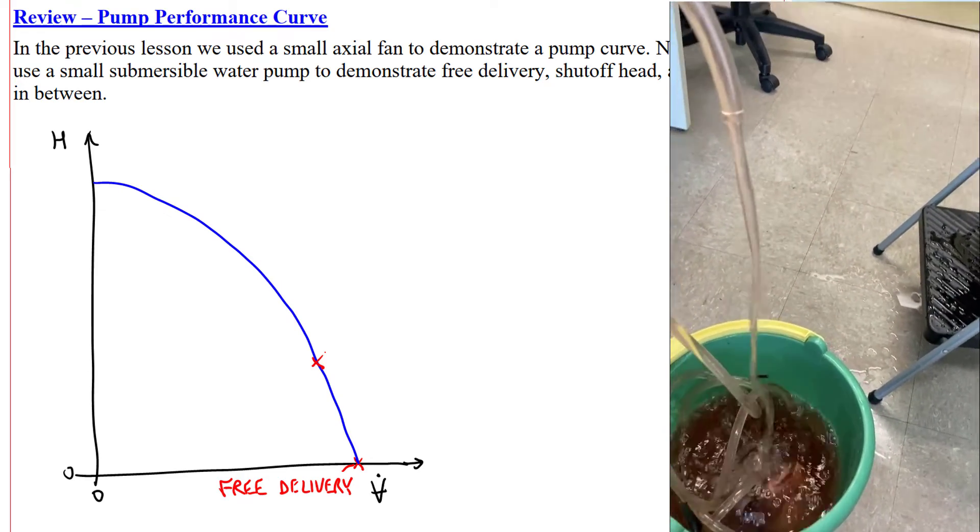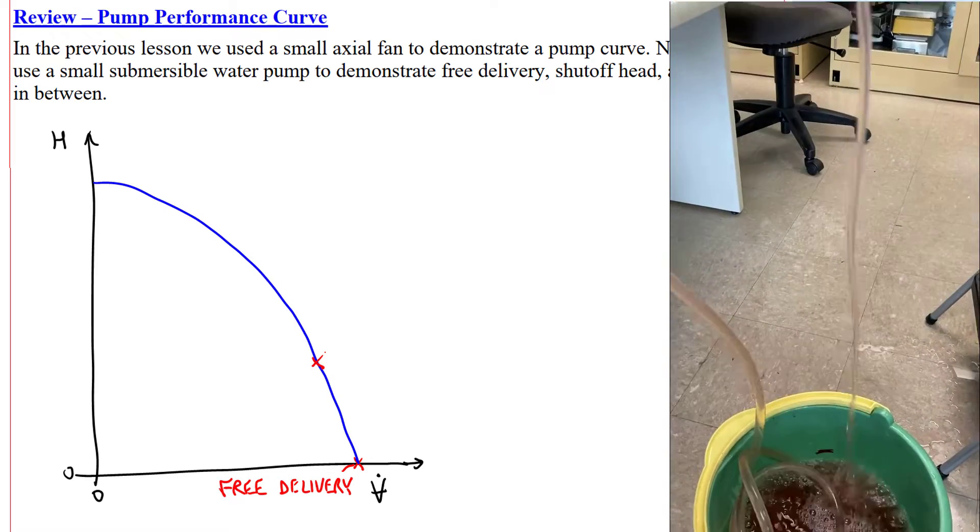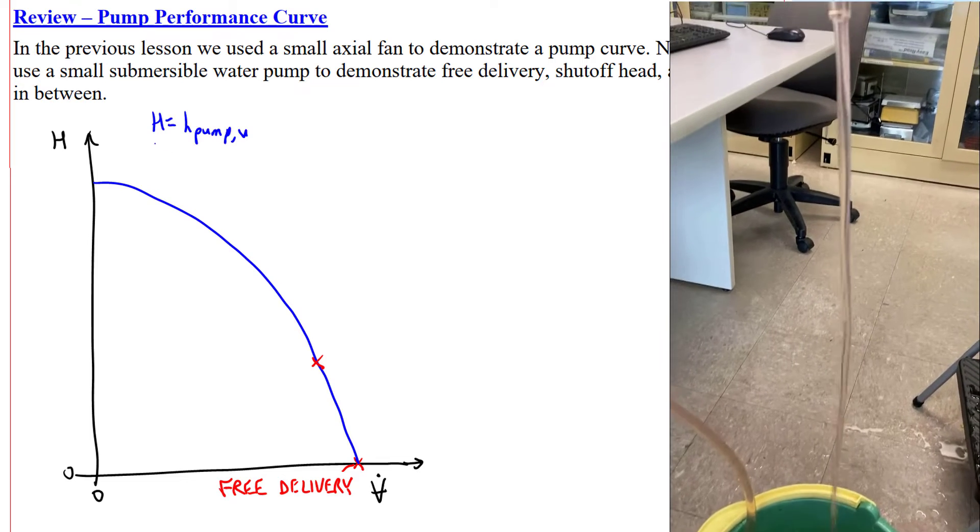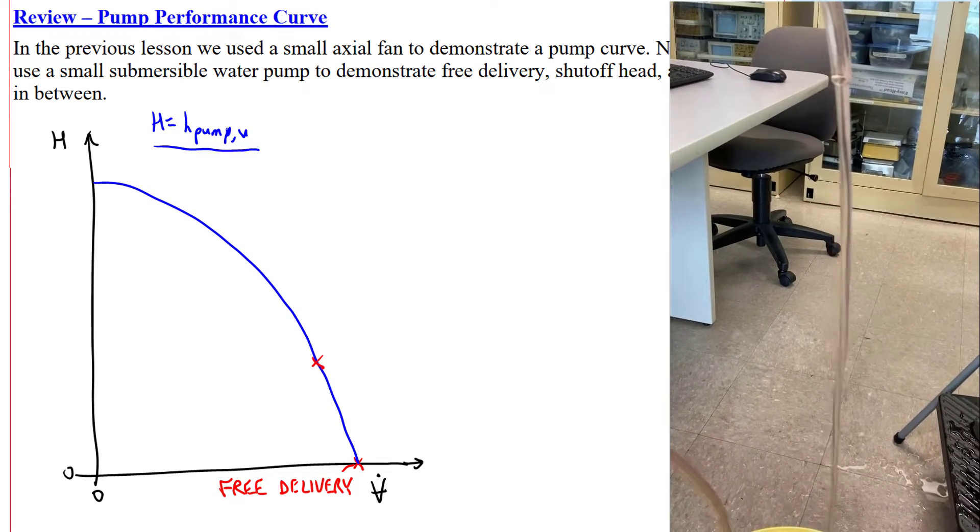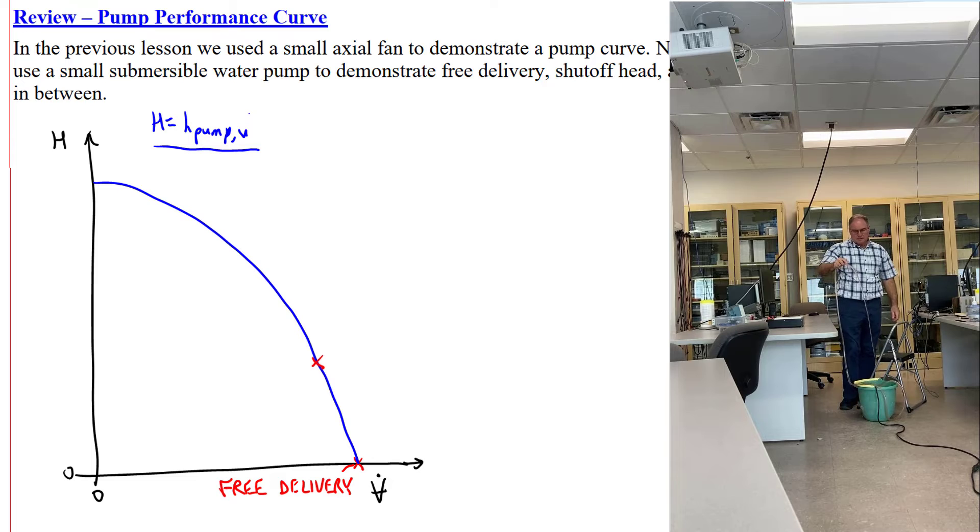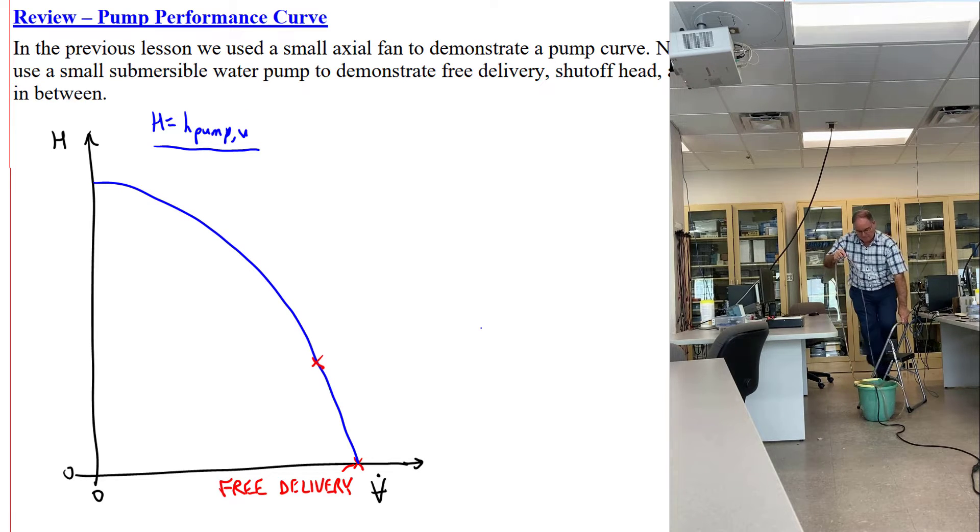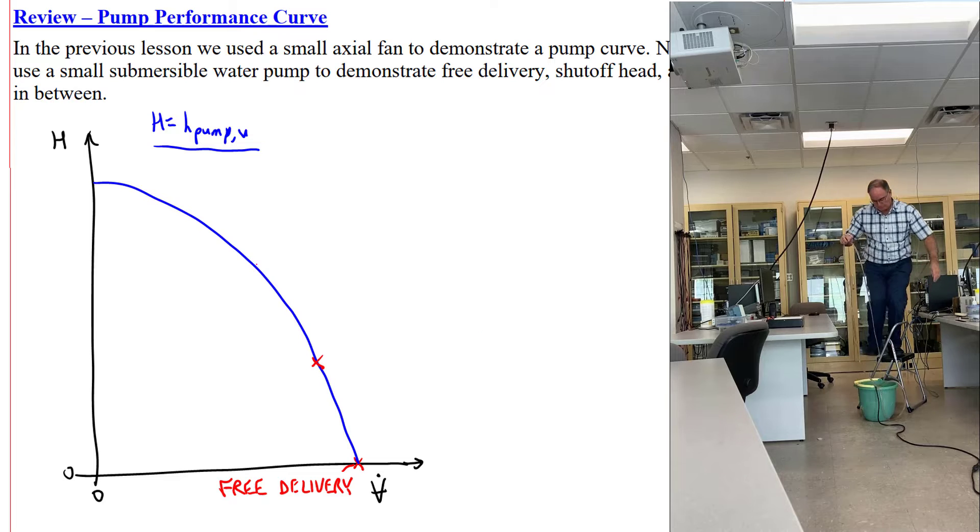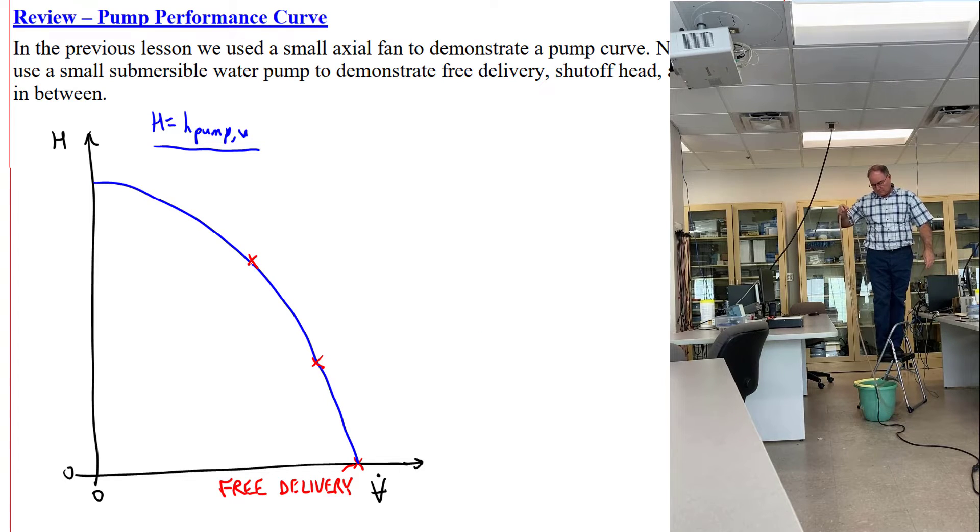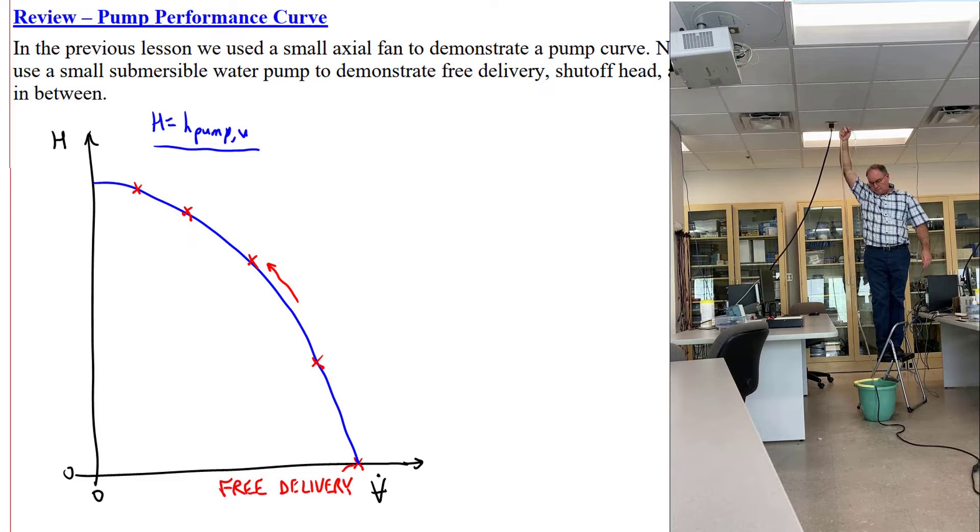As we raise the outlet of the hose, H continues to increase because remember that H is H pump U, the useful head delivered by the pump through the pipe system. This H must overcome irreversible losses and elevation increases. As we continue to raise the outlet, we keep moving along this curve. Now the flow is just a trickle.